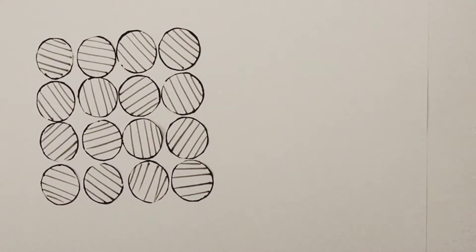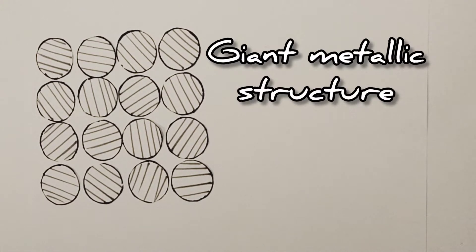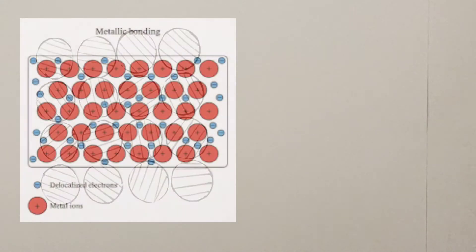The structure you can see in front of you here is that of a pure metal. This is a giant metallic structure, a regular lattice structure of metal cations surrounded by a sea of delocalized electrons.